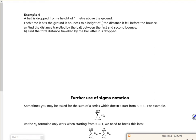Right then, last bit for this lesson. It says a ball is dropped from a height of 1 meter above the ground. Each time it hits the ground, it's reduced by three quarters.